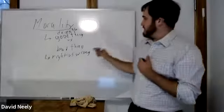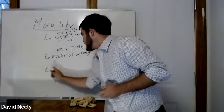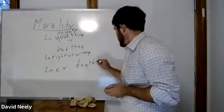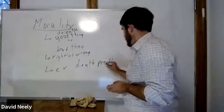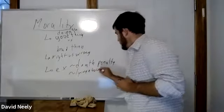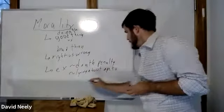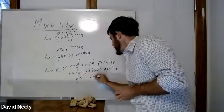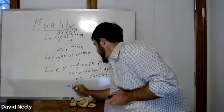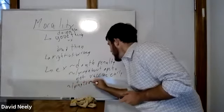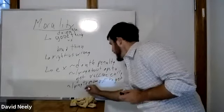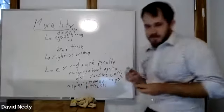Some other examples: the death penalty, lying about your age to get a vaccine early, lying to your mom to stay out of trouble. All of these are things that we typically think of as moral questions.